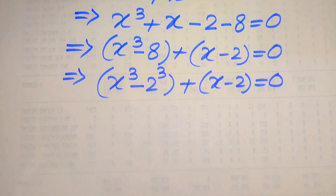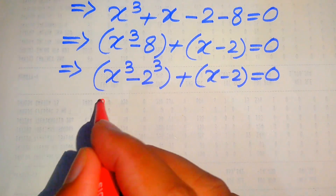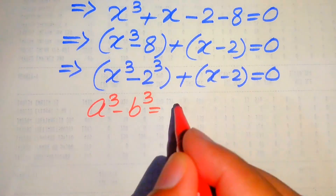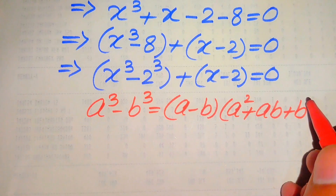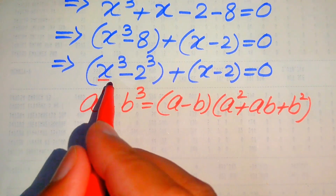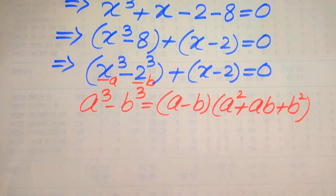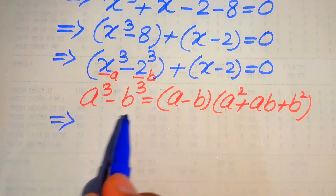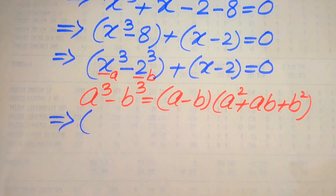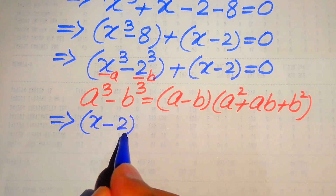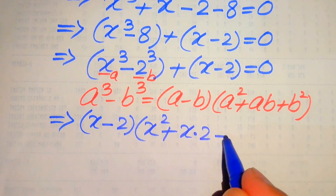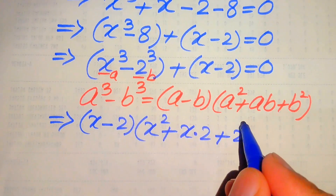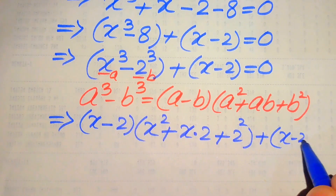In the next step we apply the cubic formula. We know that a cubed minus b cubed equals (a minus b)(a squared plus ab plus b squared). Here a equals x and b equals 2. Applying this formula to the first term, we get (x minus 2)(x squared plus 2x plus 4) plus (x minus 2) equals 0.